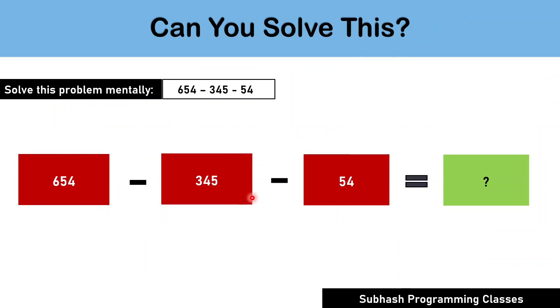Now, as an assignment, can you solve the following question? 654 minus 345 minus 54 is equal to how much? I would highly recommend you not to use any kind of calculators or do not scribble on a sheet of paper. Rather, try to use your mental power in solving this problem by yourself. Please do not move to the next slide until you solve the subtraction problem.